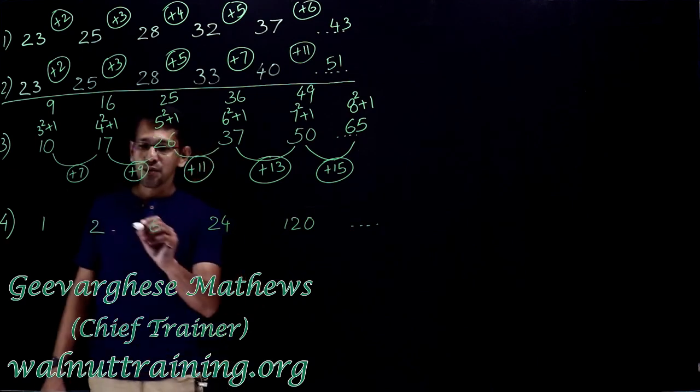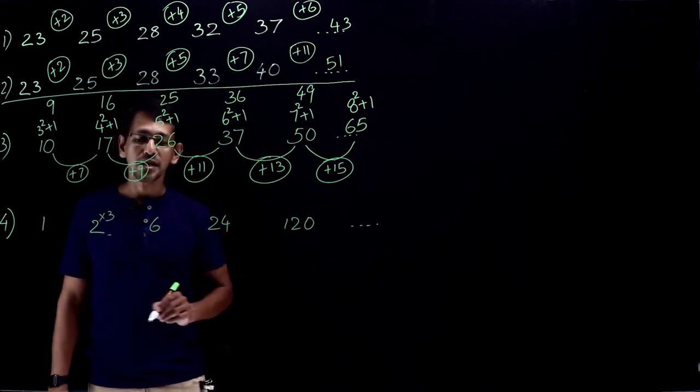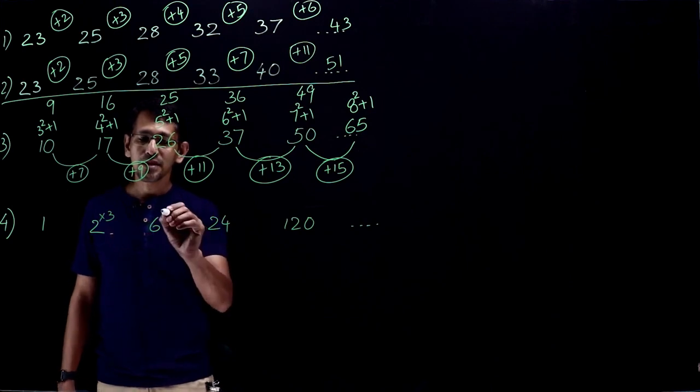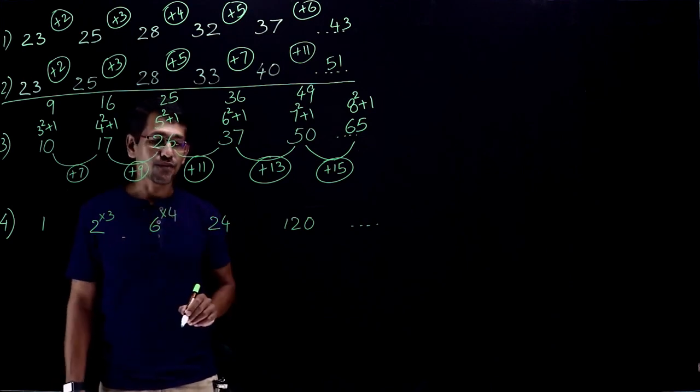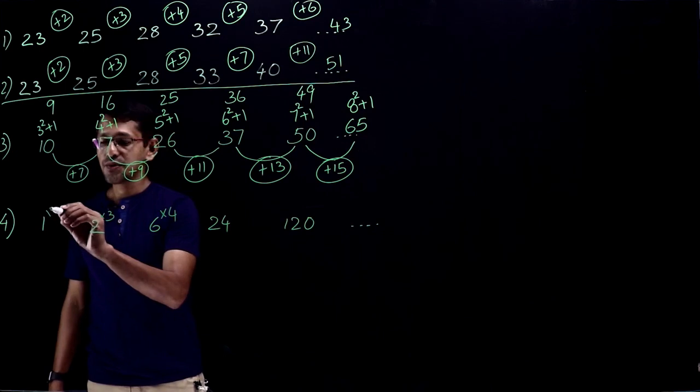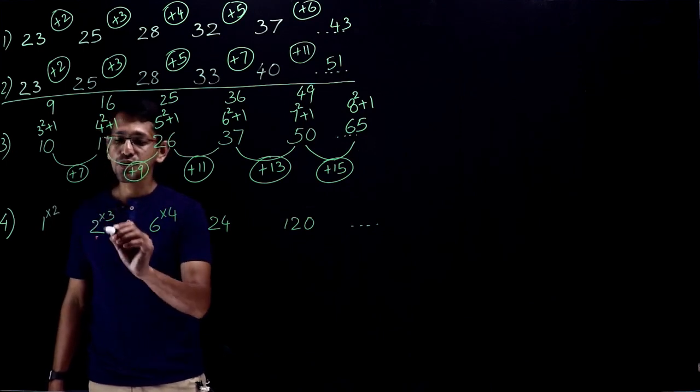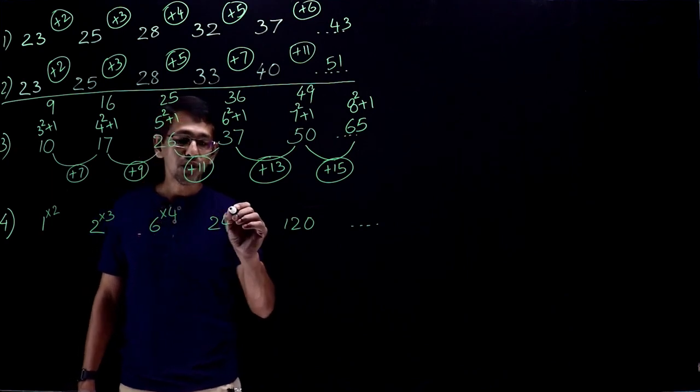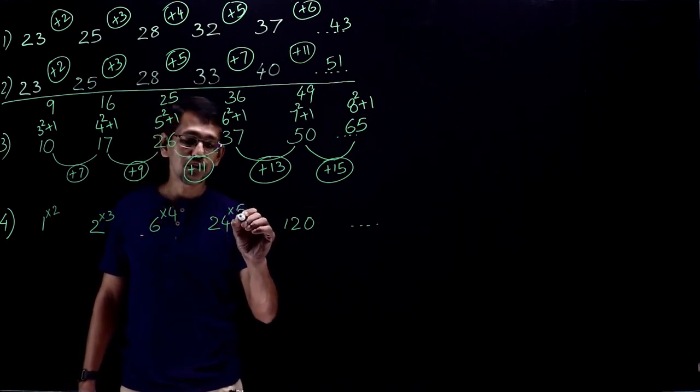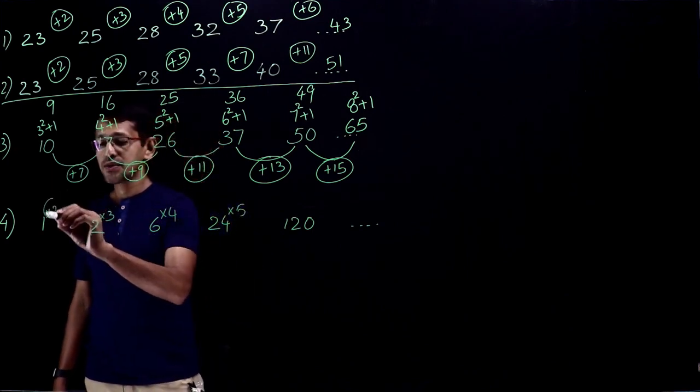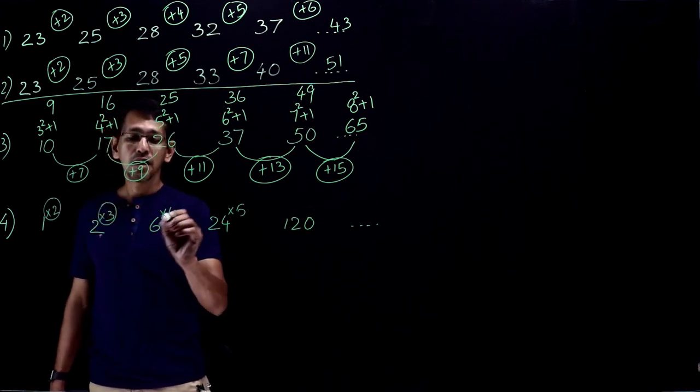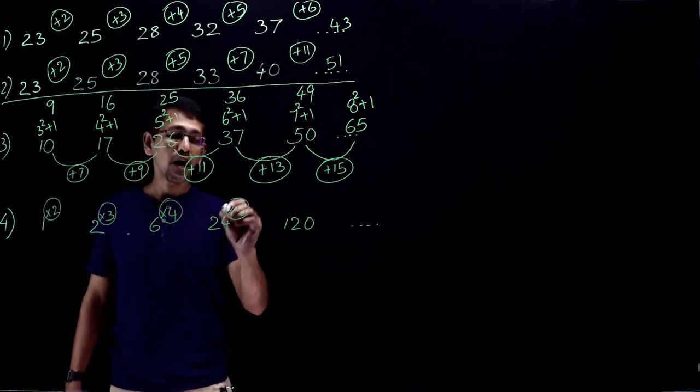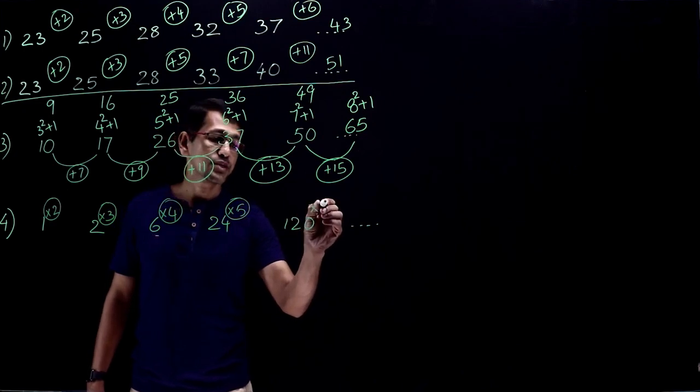Think about it this way. What comes to my mind is 2 into 3 is 6, 6 into 4 is 24. So 1 into 2 is 2, 2 into 3 is 6, 6 into 4 is 24, 24 into 5 is 120. So naturally, into 2, into 3, into 4, into 5, next one must be into 6.